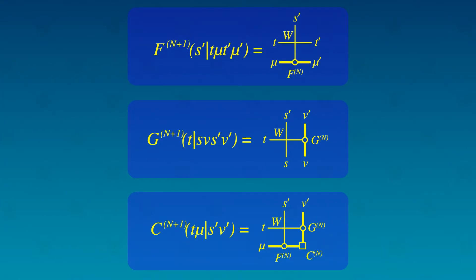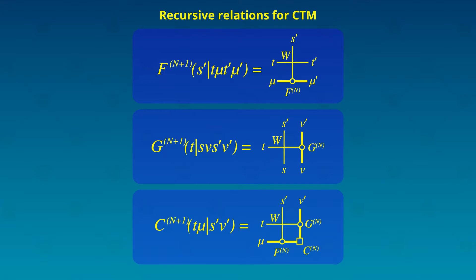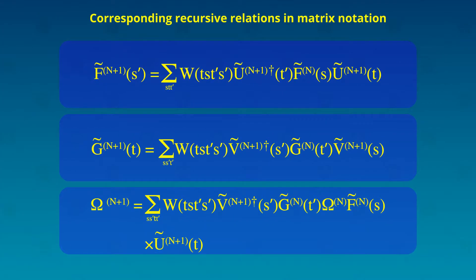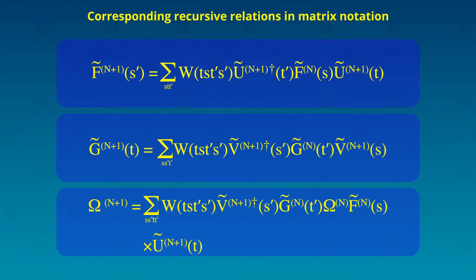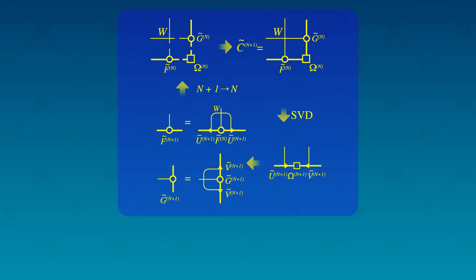Next, the team highlighted that a systematic formulation of recursive relations for CTMs leads to a real space renormalization group algorithm known as corner transfer matrix renormalization group. In this, the variational principle for the partition function is reformulated for CTM.